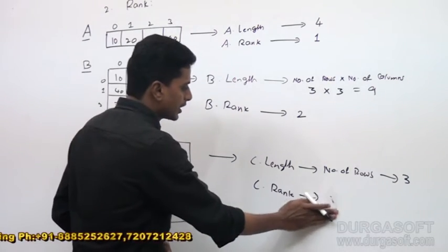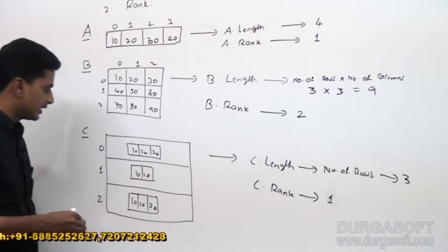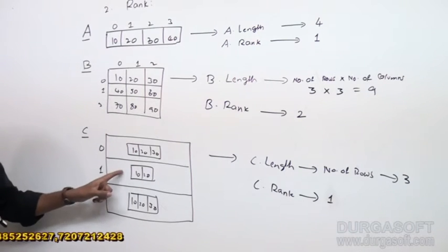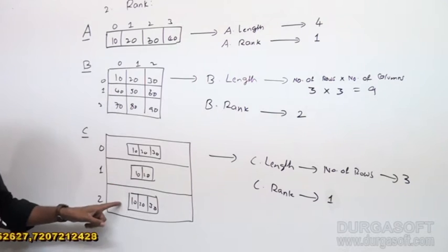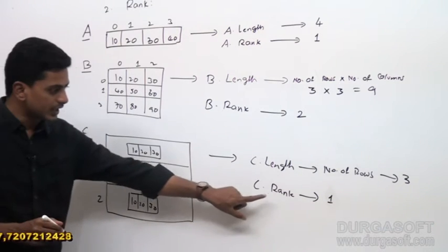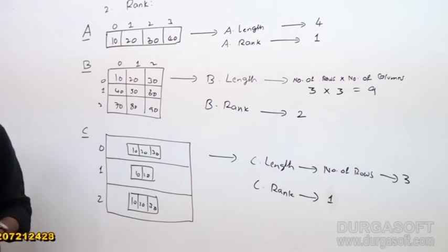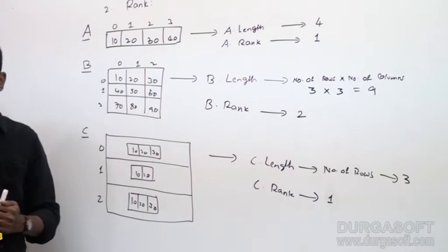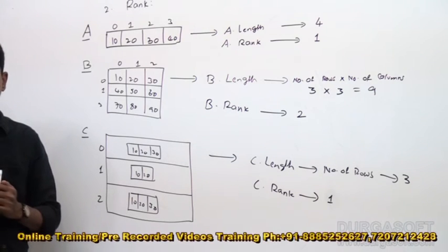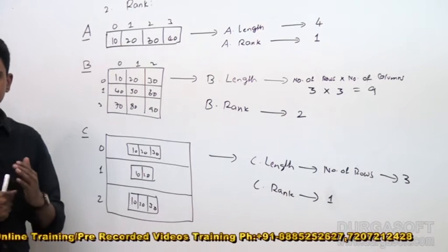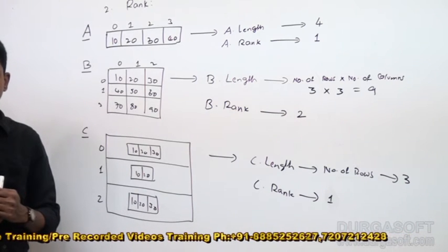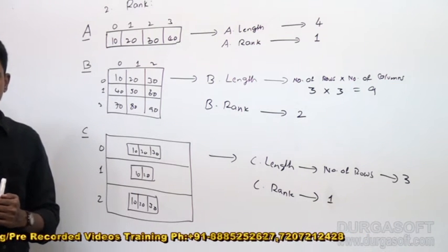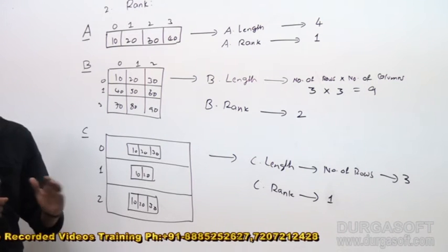The rank of a jagged array is always 1, because only the outer array is considered. Inside there are many arrays, but from the outside it is treated as a single-dimensional array. So, to summarize: length of a single-dimensional array is its size and rank is 1; length of a two-dimensional array is rows × columns and rank is 2; length of a jagged array is the number of rows and rank is 1.